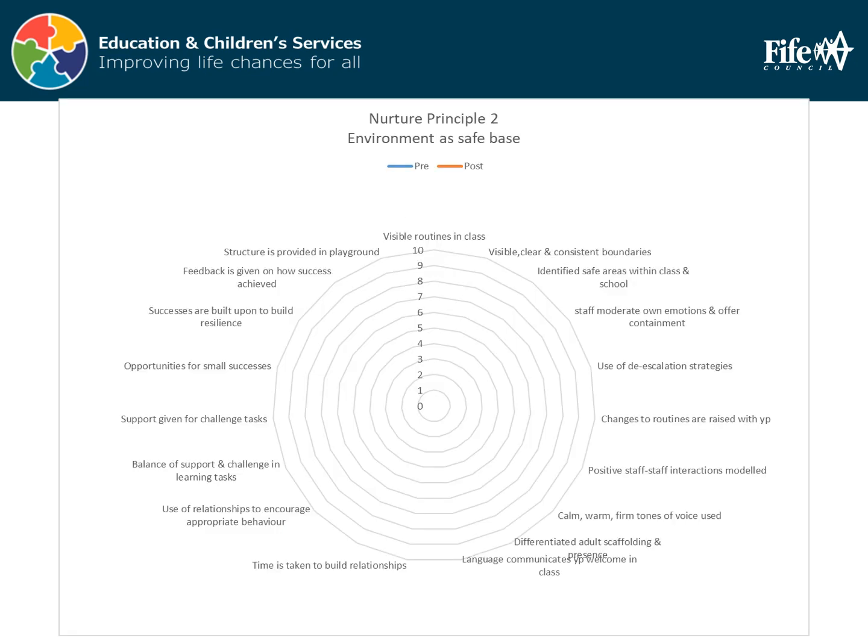The 'How Nurturing is Our School' pack from Fife's educational psychology colleagues recommends that staff complete the associated self-evaluation wheel to demonstrate areas of strength and development against elements linking to our second nurturing principle. For example: how is structure provided? Are there visible, clear and consistent boundaries? Are calm, warm yet firm tones of voice used? Is there a balance of support and challenge in tasks? Are changes to routines communicated clearly?